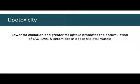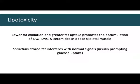Let's pick up where we left off. Lipotoxicity seems to make sense as a theory. Less oxidation, more uptake means more storage of fat in the muscle — not only fat, but triglycerides, diglycerides, and ceramides. All of those go up. More storage in the muscle means more things are around to interfere with insulin signaling.